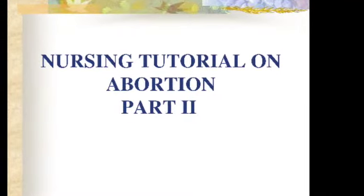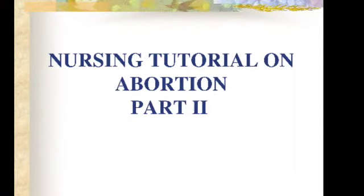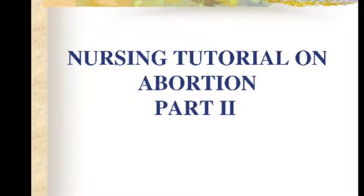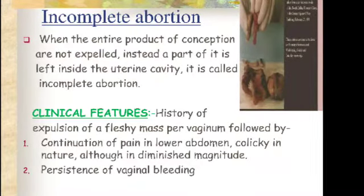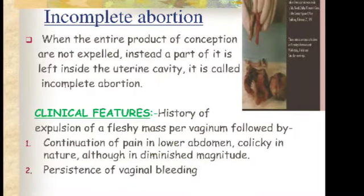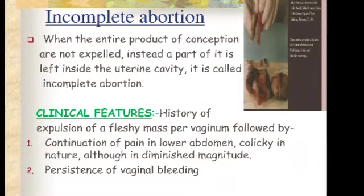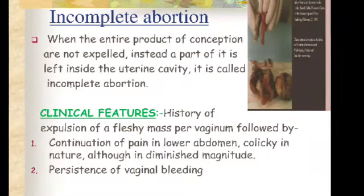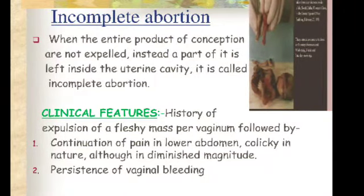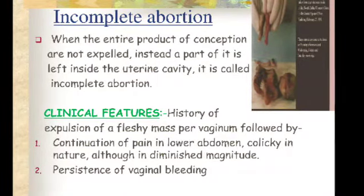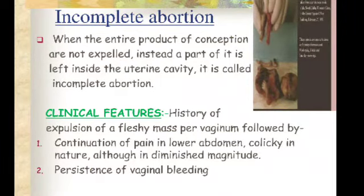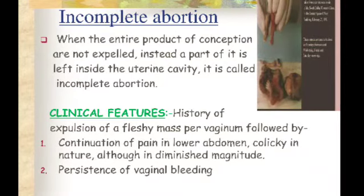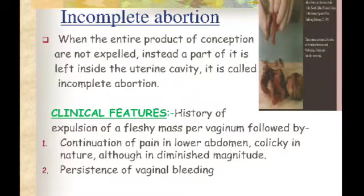Hello friends, welcome back to my channel. Today I am here with my topic: Abortion Part 2. The next type is incomplete abortion — when the entire product of conception is not expelled; instead, part of it is left inside the uterine cavity. This type of miscarriage where some part remains inside is called incomplete abortion.